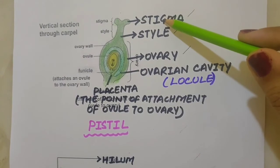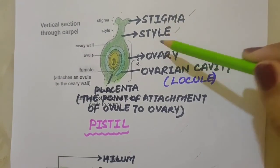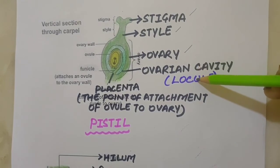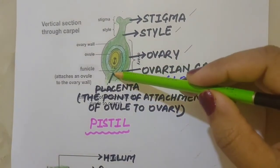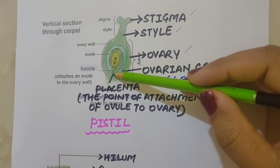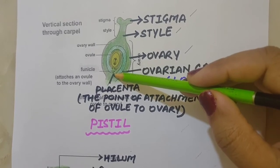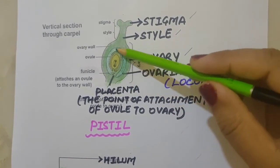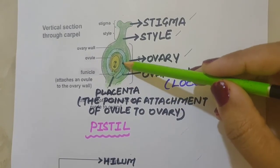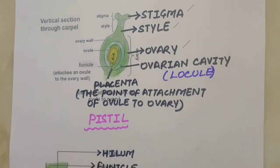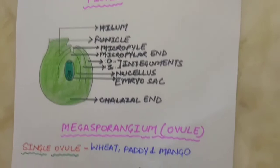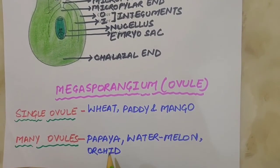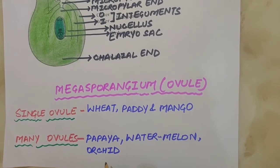The pistil has stigma, style and ovary. The inside space is the ovarian cavity or locule, and the point of attachment of ovule to ovary is called the placenta. The ovule — also called the megasporangium — is present inside. In some plants, a single ovule is present, such as in wheat, paddy and mango, while in others many ovules are present, like in papaya, watermelon and orchid.